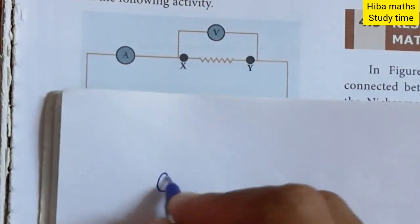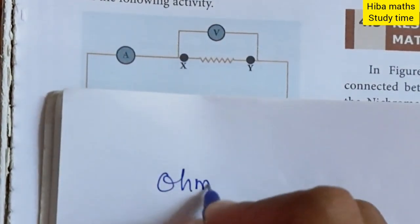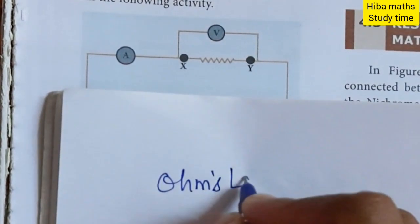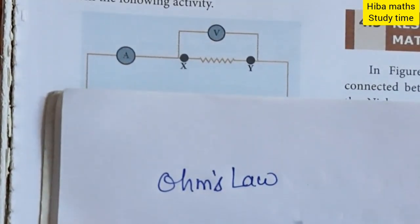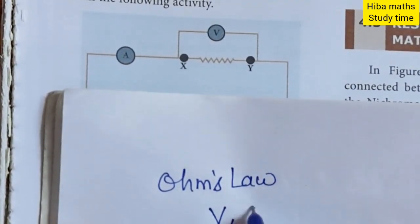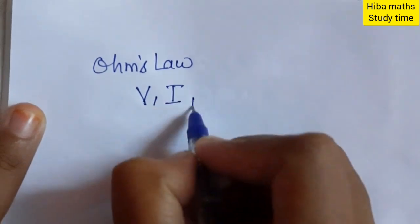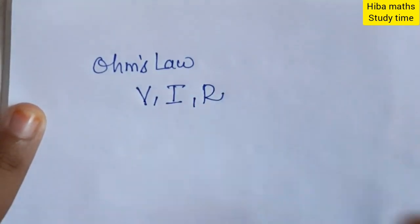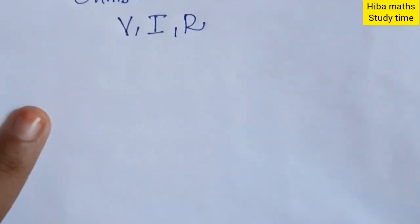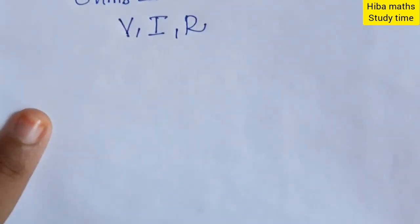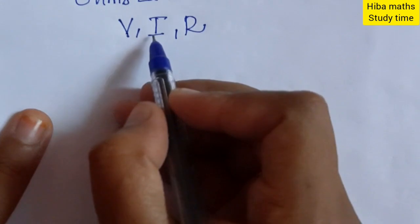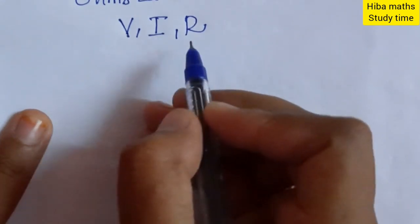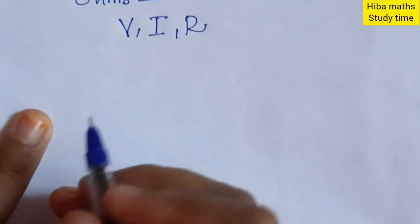Ohm's Law describes the relationship between voltage, current, and resistance. We will talk about these three quantities: voltage, current, and resistance.